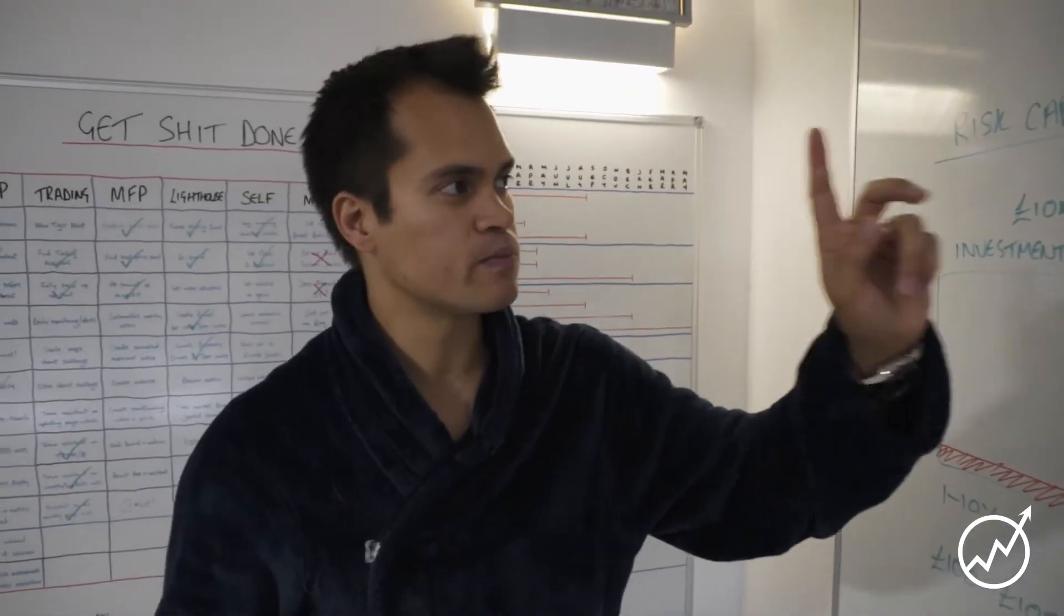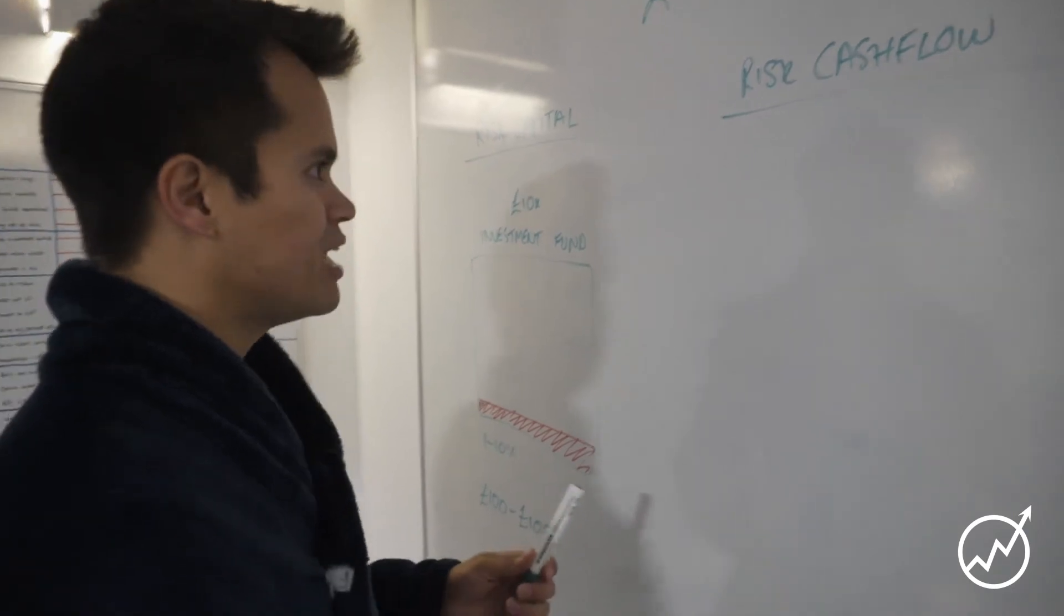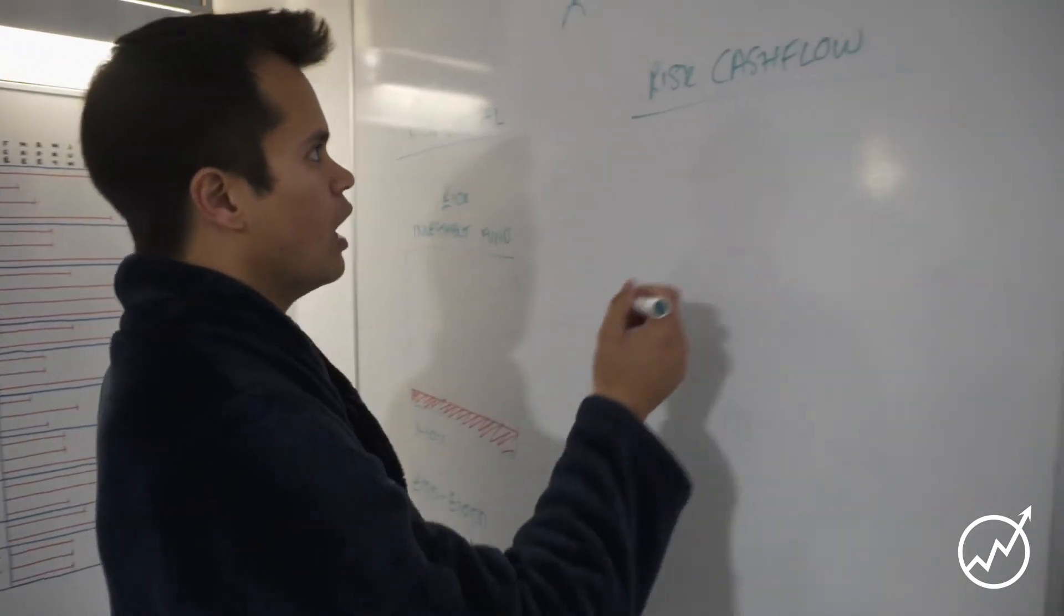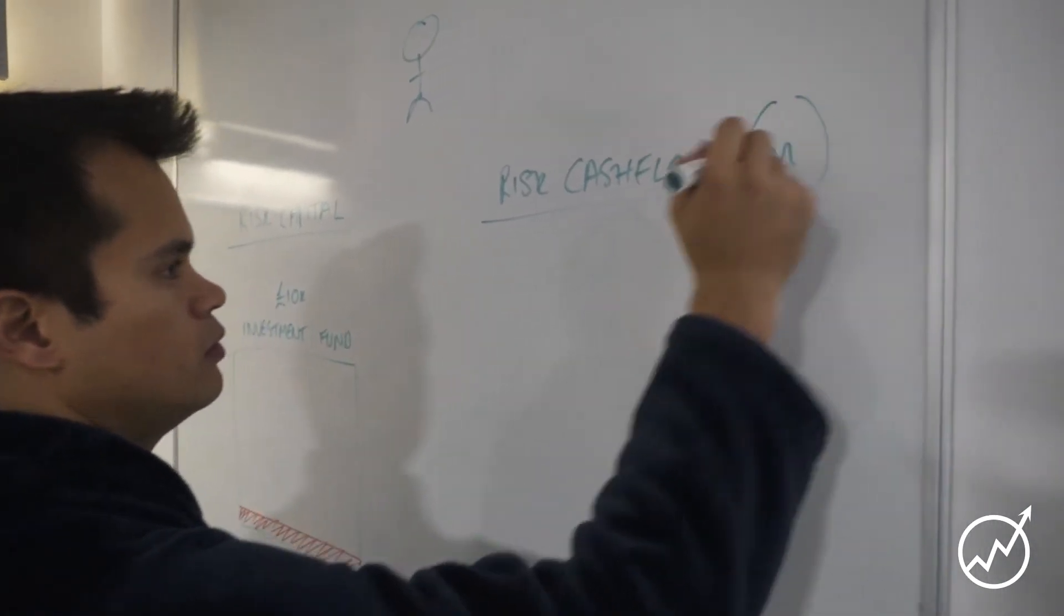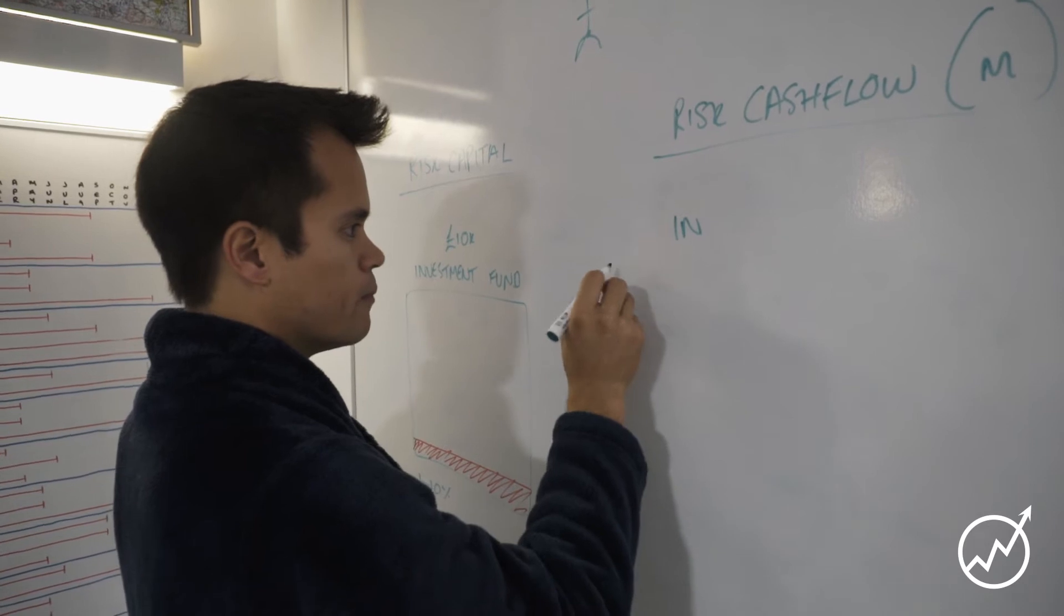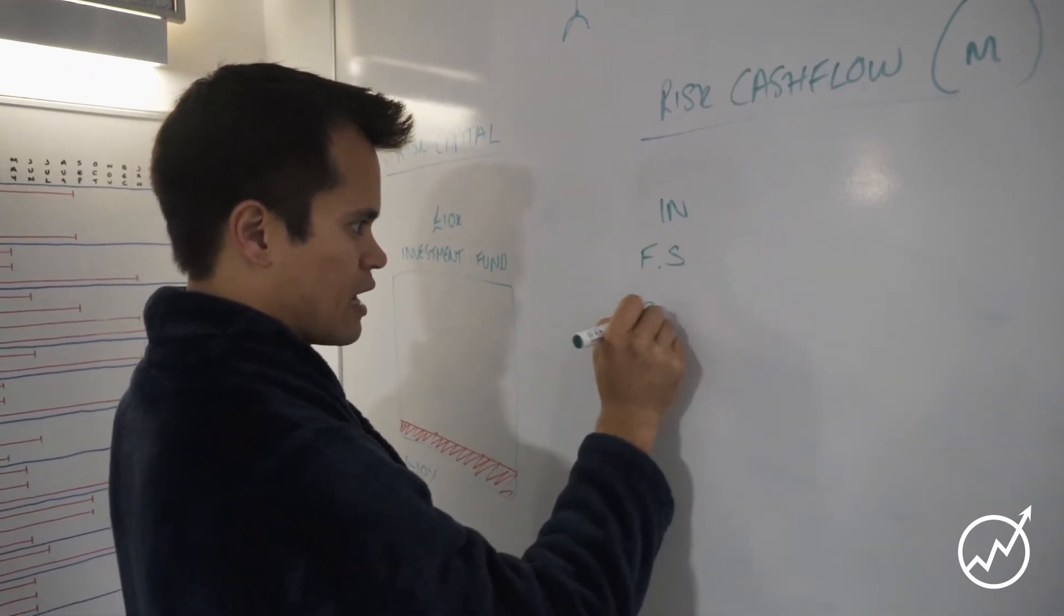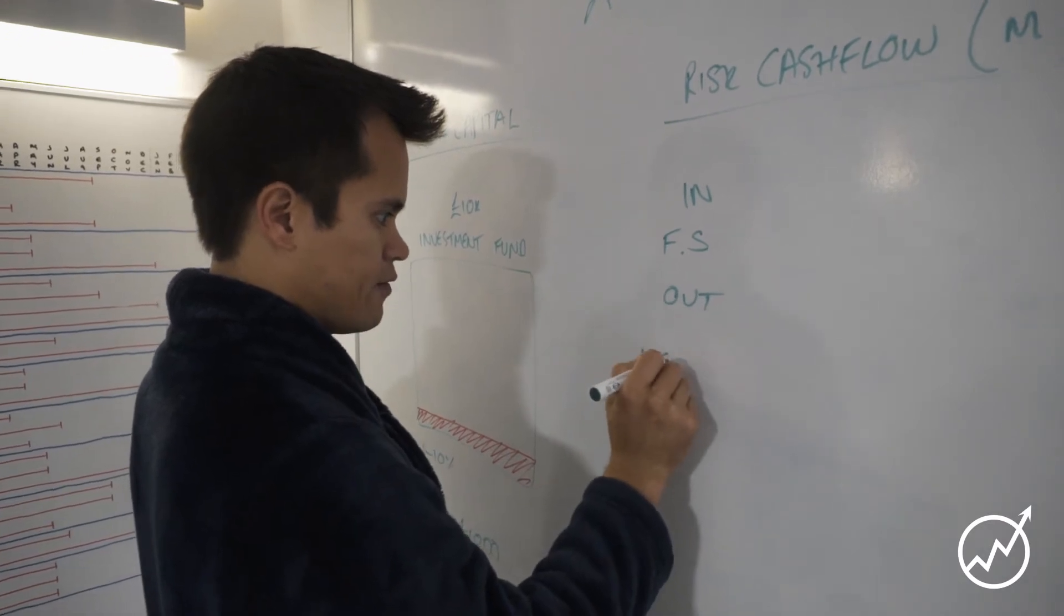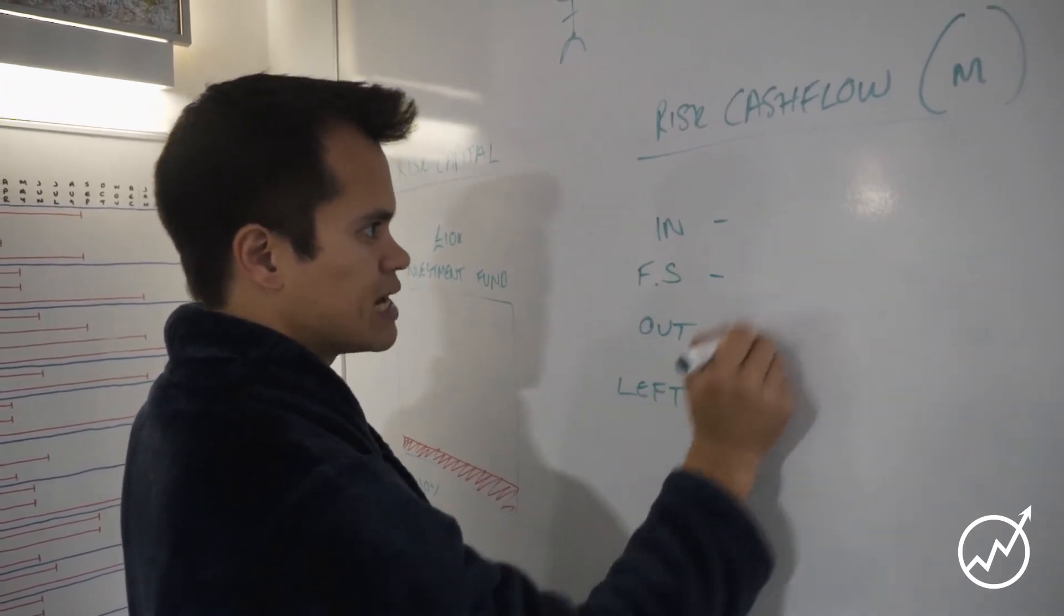But one thing which most people aren't aware of is risk cash flow. So let's keep things simple again, let's just say this is on a monthly basis. So on a monthly basis, let's say, let's keep it simple: in, forced savings, out, left. I'm keeping things really simple here.